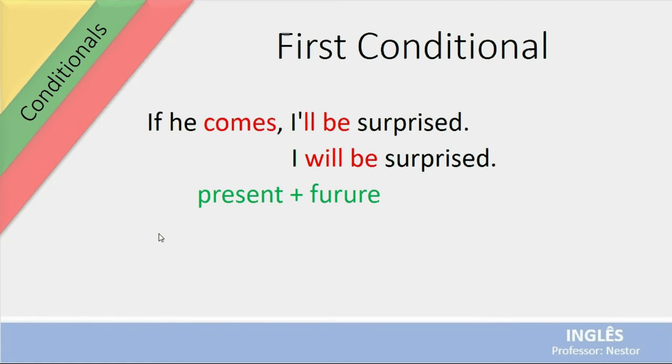Você tem um verbo no presente. If he comes, é o verbo no presente. E I'll be, é a mesma forma, the I will be, a contração. É future. Então, você tem na first conditional, qual é a estrutura? Não é mais presente, plus present. Você tem agora present, plus future. Inclusive, tá errado. Future. É um letter T aqui.